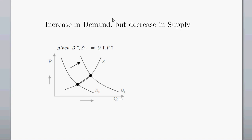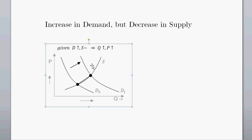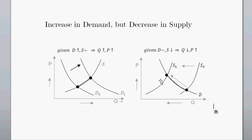What about an increase in demand but a decrease in supply? With an increase in demand we saw an increase in equilibrium price and an increase in equilibrium quantity. With a decrease in supply — going from S sub nought to S sub 1 — that's going to have a decrease in the new quantity bought and sold in this market, and an increase in the equilibrium price.